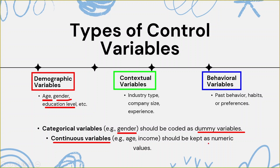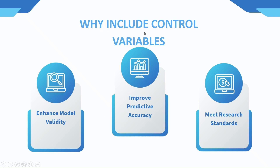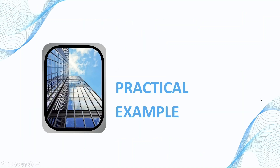For continuous control variables, such as income, they should be kept as numerical values — that is normal. Why include control variables in the model? We have already discussed this: to enhance model validity, improve predictive accuracy, and meet research standards.